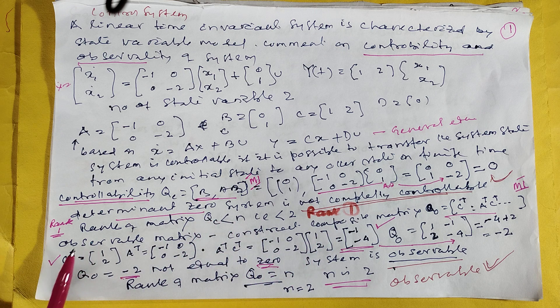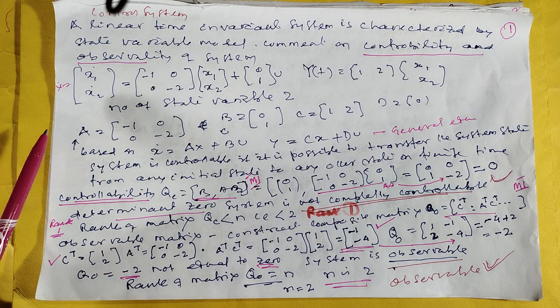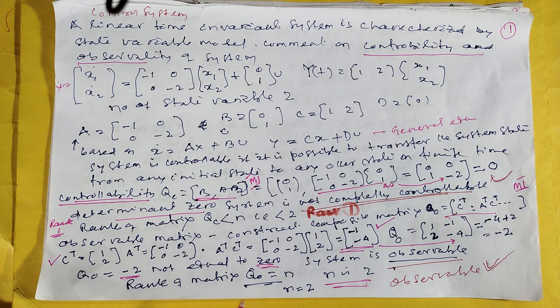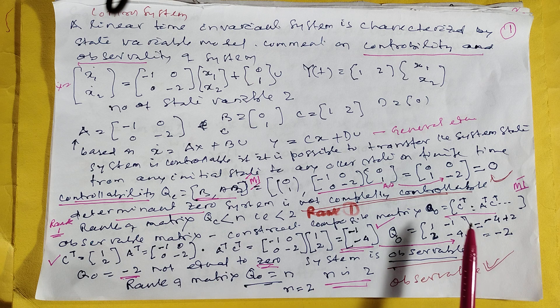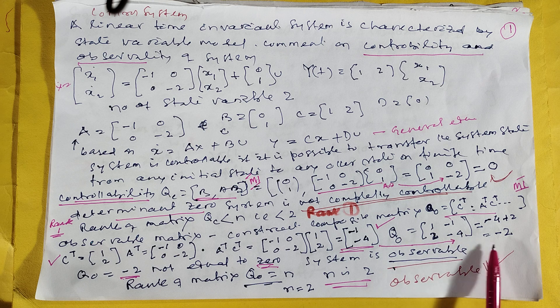And it is observable. For observability you have to find CT and AT. A is given, find AT. C is given, find CT. Then what is the equation? Q0 equals CT into AT CT. This is the equation. It is minus 2, so it is observable, rank is 2.